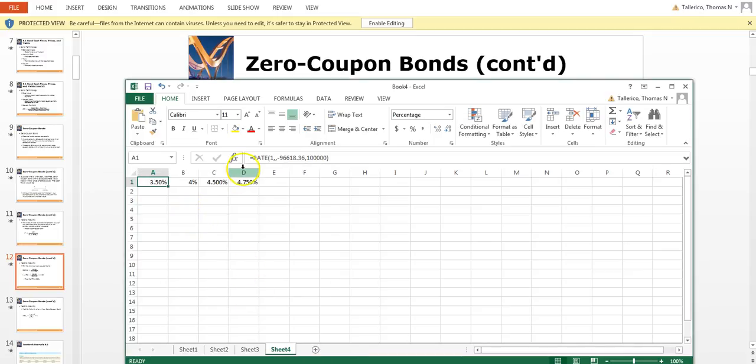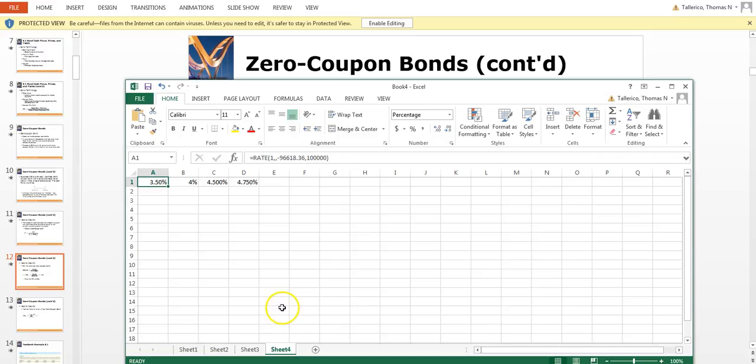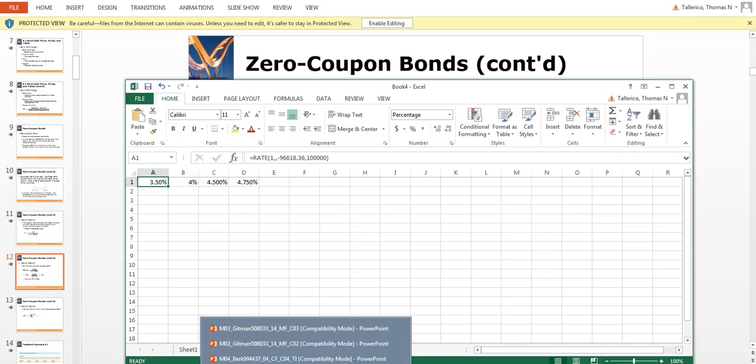All I did was use the rate function here. You can see one period, here's the present value and here is the future value. That's all you have to do and you're basically done. I've done it for several other ones that are in the slides, which I'll show you shortly.